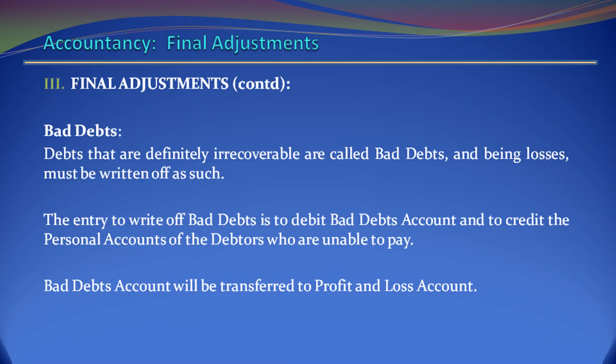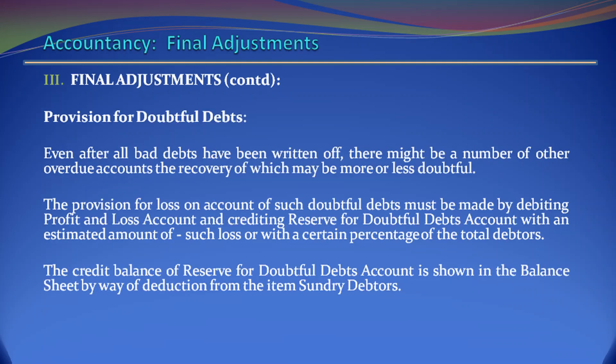Bad Debts. Debts that are definitely irrecoverable are called bad debts, and being losses must be written off as such. The entry to write off bad debts is to debit bad debts account and to credit the personal accounts of the debtors who are unable to pay. Bad debts account will be transferred to profit and loss account. Provision for Doubtful Debts. Even after all bad debts have been written off, there might be a number of other overdue accounts the recovery of which may be more or less doubtful. The provision for loss on account of such doubtful debts must be made by debiting profit and loss account and crediting reserve for doubtful debts account with an estimated amount of such loss or with a certain percentage of the total debtors. The credit balance of reserve for doubtful debts account is shown in the balance sheet by way of deduction from the item sundry debtors.